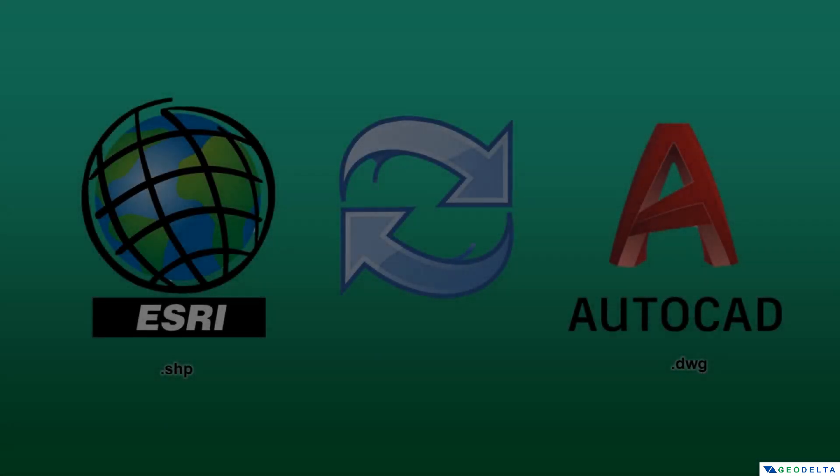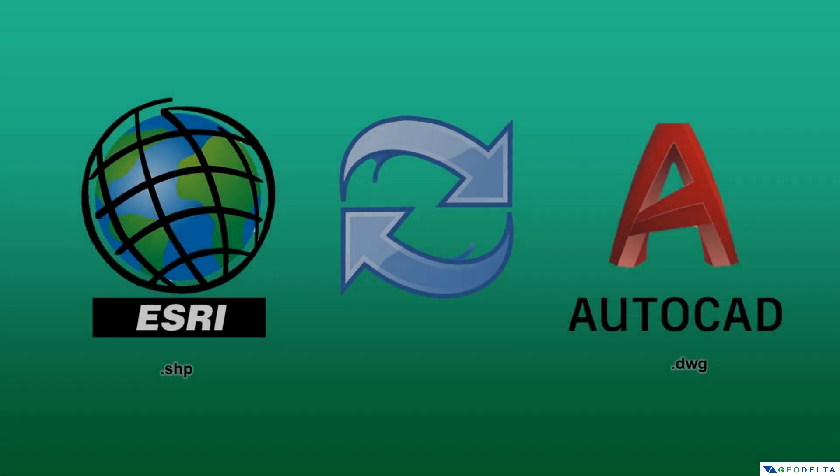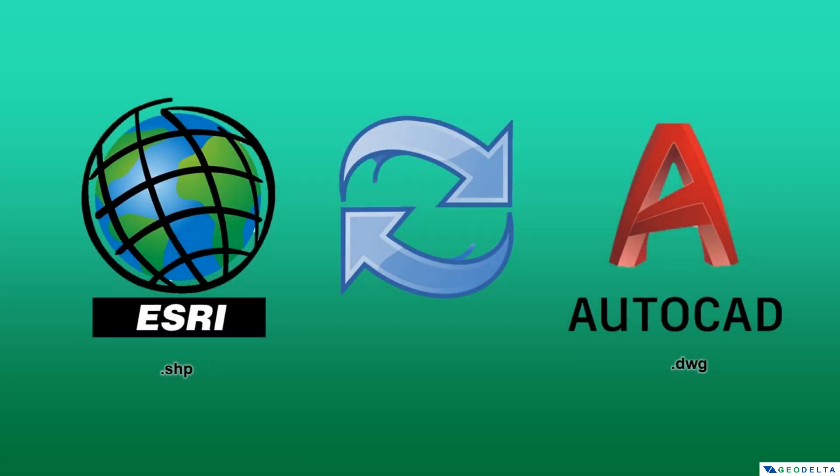Hello guys, welcome to another tutorial. In this tutorial I'm going to show you how to convert geospatial vector data of formats like .shp — basically shapefiles — to file formats that can be read by common CAD software like AutoCAD.